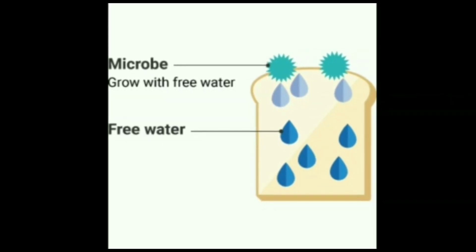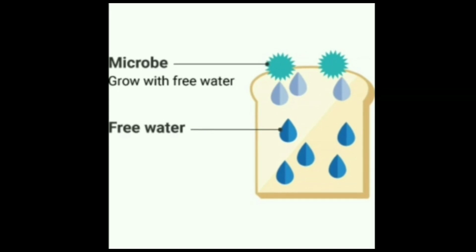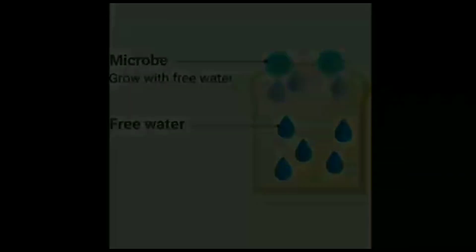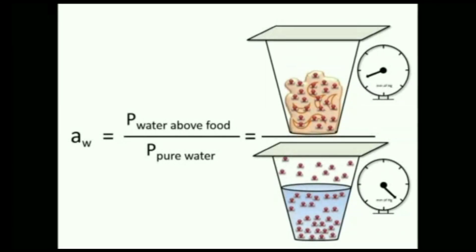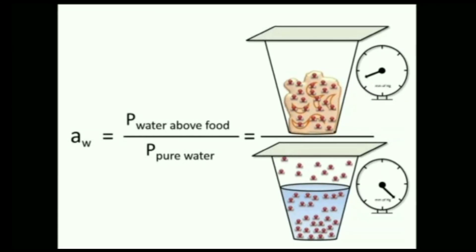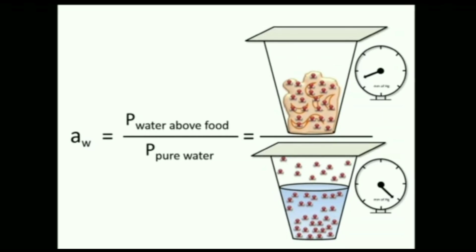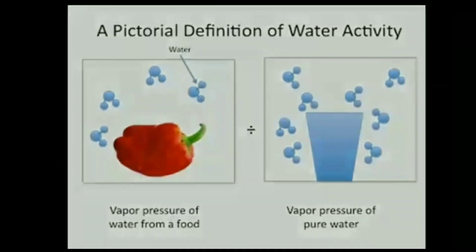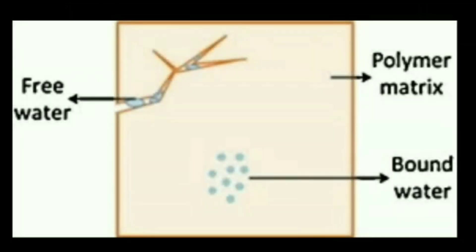Microbial growth makes food unfit for human consumption. Water activity by definition is the ratio of the vapor pressure of water in the substrate to that of pure water at the same temperature. Tightly bound water has no tendency to escape from food as vapor and therefore exerts no partial pressure, giving it a water activity of zero.